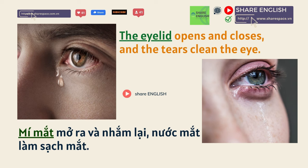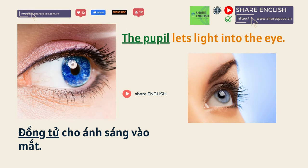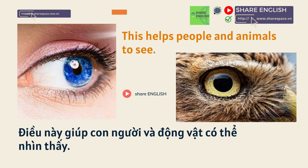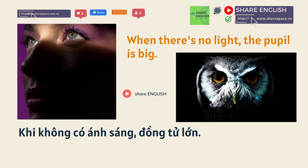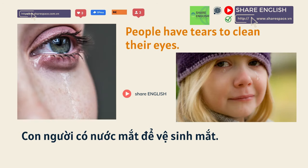The tears clean the eye. The pupil lets light into the eye — this helps people and animals to see. When there's lots of light, the pupil is little. When there's no light, the pupil is big.